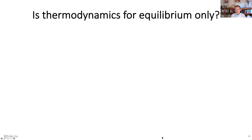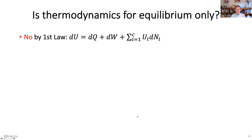One question people often ask is: is thermodynamics for equilibrium only? If you look at the first law, no, it doesn't have to be equilibrium. It always says that internal energy change is equal to the heat exchange from the surroundings, the work from the surroundings, and the mass from the surroundings. Of course, you can also give out heat, do work to outside, and lose mass.